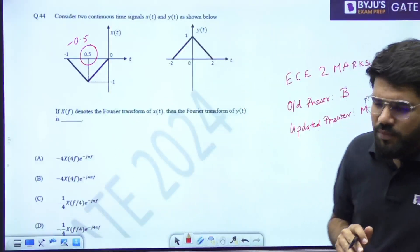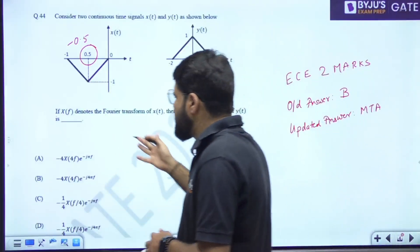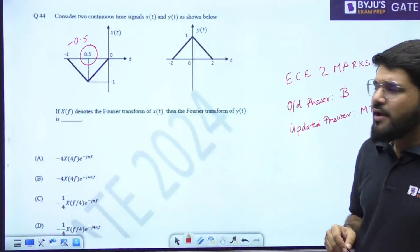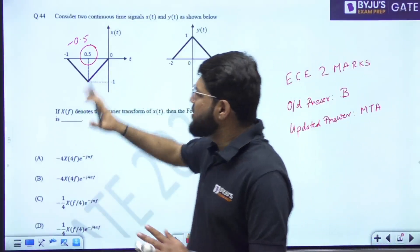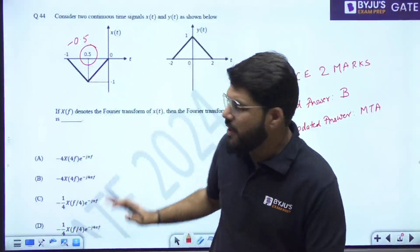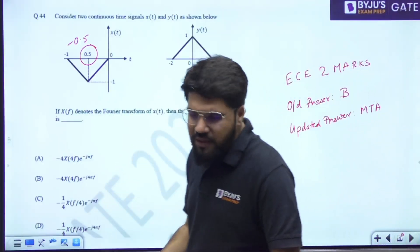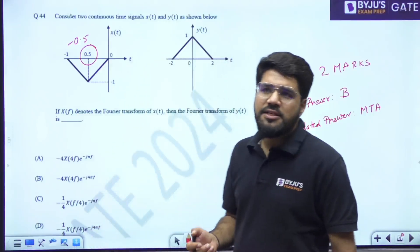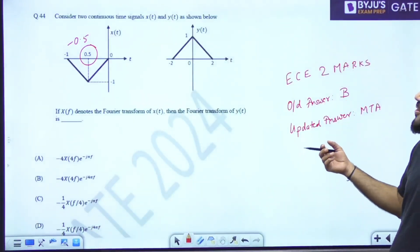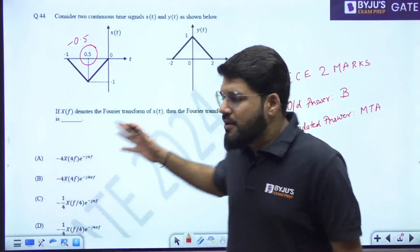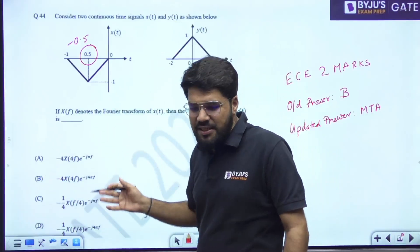The original answer given was B, and it is a completely correct question. In fact, an easy one for two marks, I would say, because there are a lot of questions of this kind in previous years also. Rest all, everything is fine. If you take it as -0.5, the question property you apply, you will get it as option number B. But it's because of this small typing error, it has been given as marks to all.